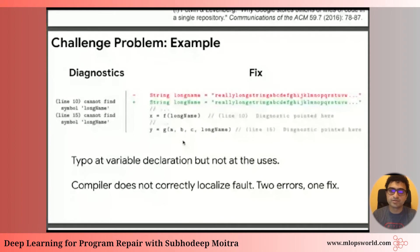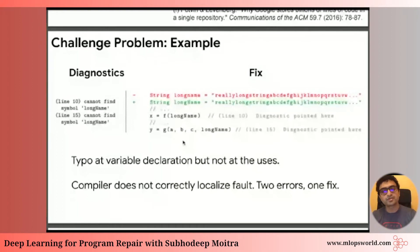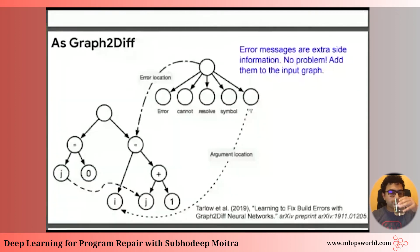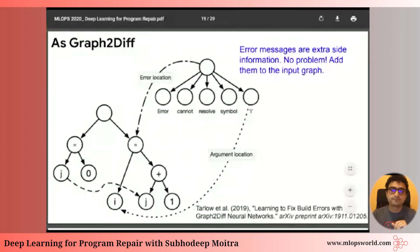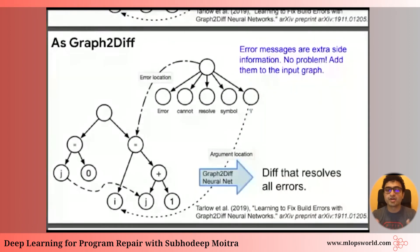Going back to our learning-to-edit-software framework, we represent the broken state of code as an abstract syntax tree. The compiler gives us extra information, so we can turn that into a subgraph — an arbitrary subgraph that's useful — plug it into the existing graph, push it through a graph neural network, and generate a diff that resolves the errors in the graph.